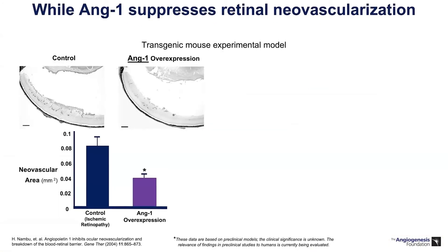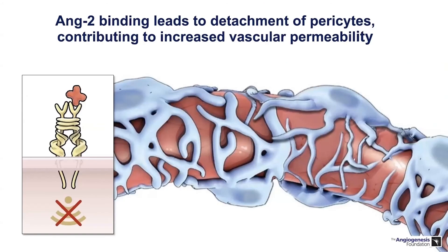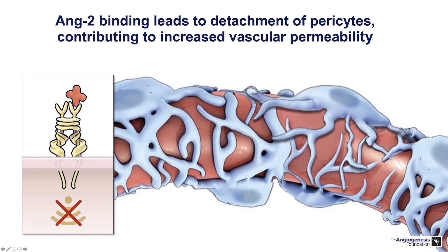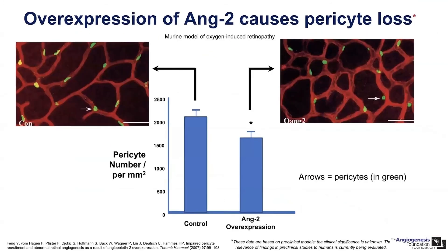In an ex vivo model, ANG1 overexpression can suppress retinal neovascularization, while ANG2 actually facilitates neovascularization. Quantifying neovascular area: in an ANG1 overexpressed model, the area of neovascularization is reduced compared to a state where ANG2 is relatively overexpressed. We know that ANG2 binding leads to detachment of pericytes, contributing to increased vascular permeability and breakdown of normal endothelial architecture. With ANG2 overexpression, there is a reduction in the number of pericytes, whereas ANG1 drives pericyte survival and attachment to endothelial cells.